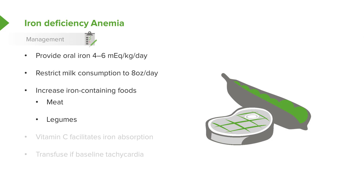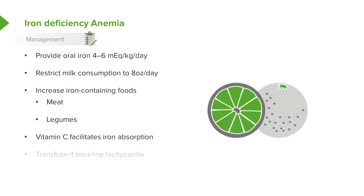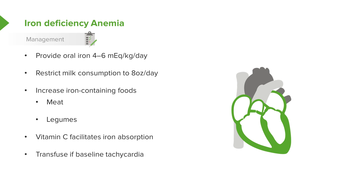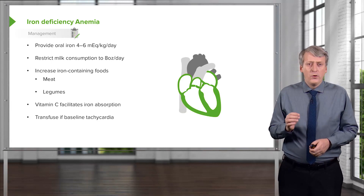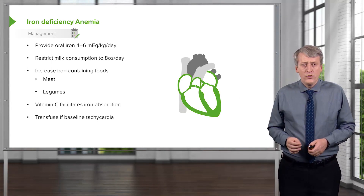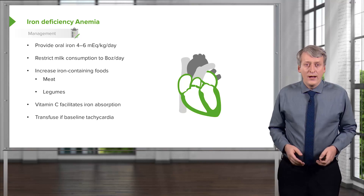We will also increase iron-containing foods such as meat and legumes. We often supplement vitamin C because it facilitates iron absorption in the gut. If a patient has become tachycardic, we are going to need to transfuse — typically at a hemoglobin of around 7. We don't usually use the hemoglobin number alone to decide when to transfuse; we typically use tachycardia as the clinical indicator.